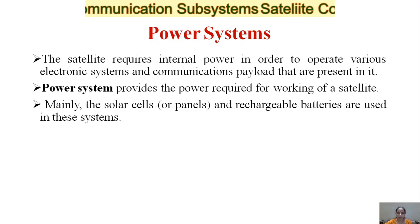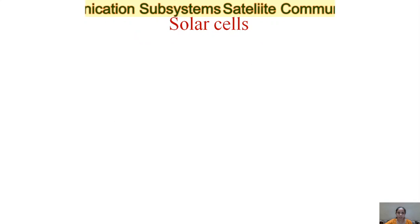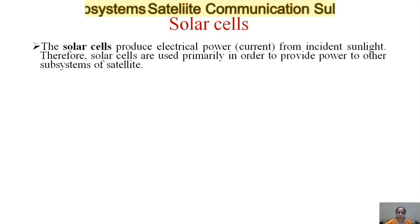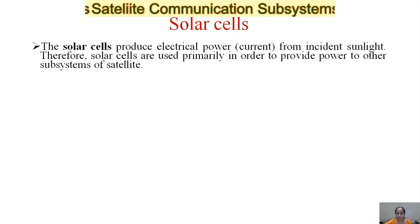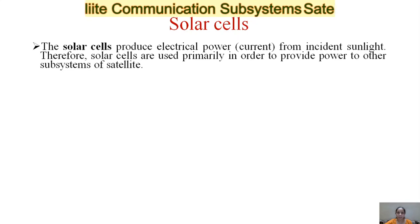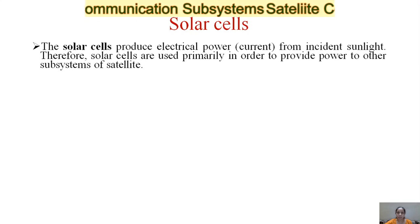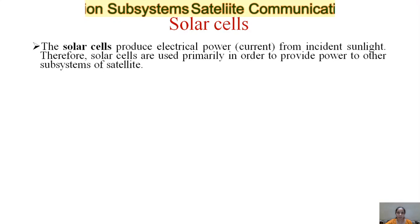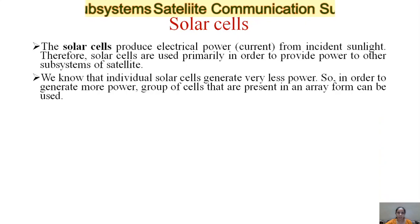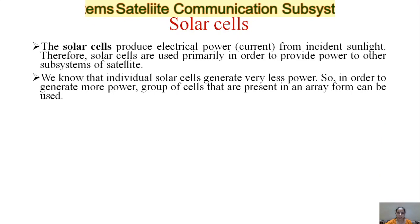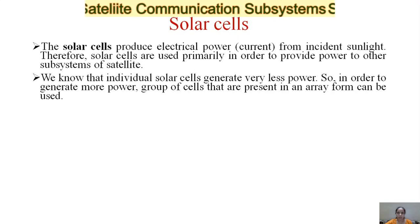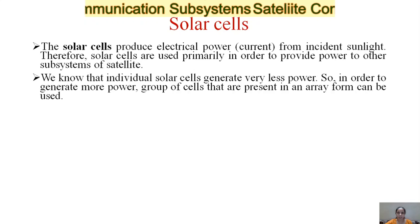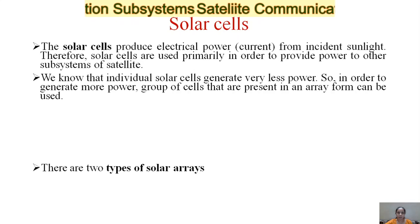Mainly solar cells or panels and rechargeable batteries are used in these systems. Solar cells produce electrical power, generally in the form of current, from incident sunlight. Solar cells are used primarily to provide power to other subsystems of the satellite. Since individual solar cells generate very little power, groups of cells arranged in an array form are used to generate more power.